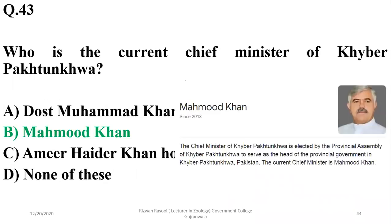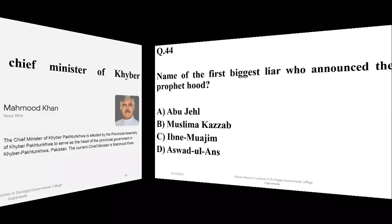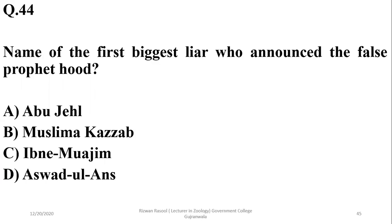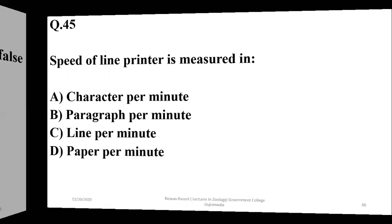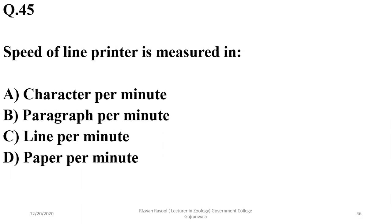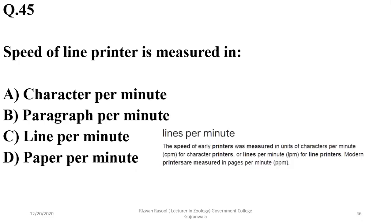Question 44: The name of the first biggest liar who announced false prophethood was Musailama al-Kazzab. Question 45: The speed of a line printer is measured in lines per minute, so C is the right option.